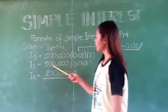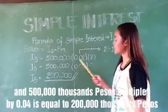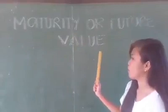And 500,000 pesos multiplied by 0.04 is equal to 20,000 pesos.